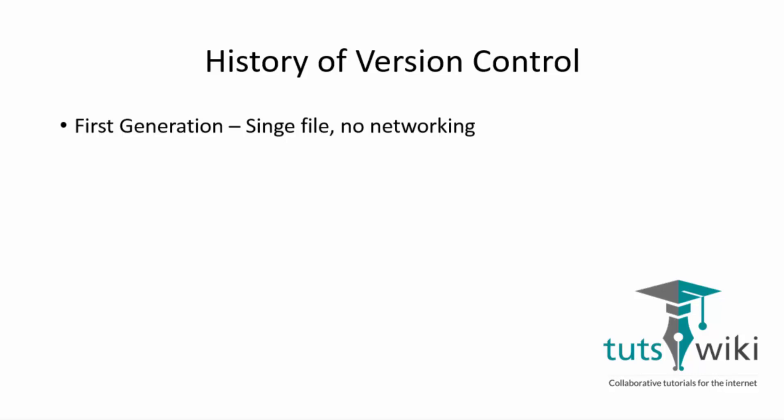Here is a brief history of version control. The very first generation was developed back in the 1970s with single file and no networking. So what that means is if I am having a single file, for example tutes wiki.txt, I can have different versions of that file but there is no networking between different files within the same repository.